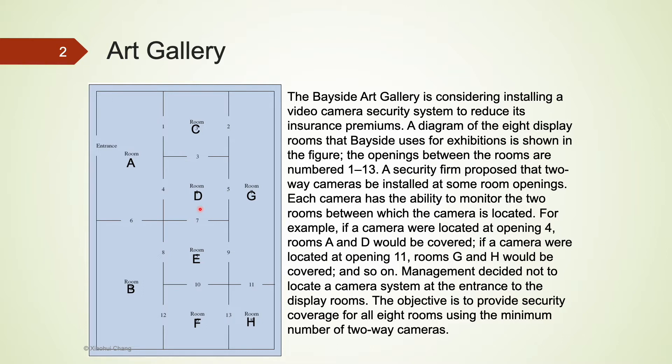For example, if a camera were located at opening 4, rooms A and D would be covered. If a camera were located at opening 11, rooms G and H would be covered, and so on. The objective is to provide security coverage for all 8 rooms using the minimum number of two-way cameras.